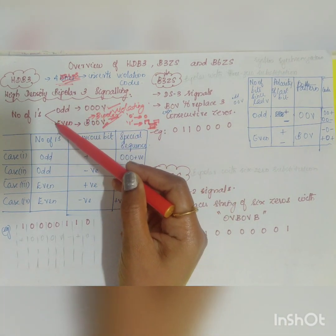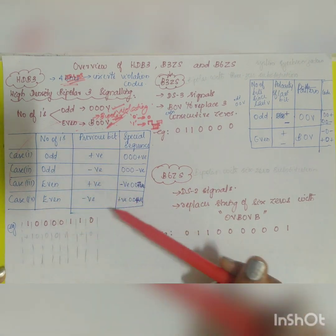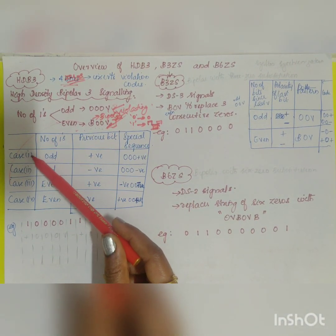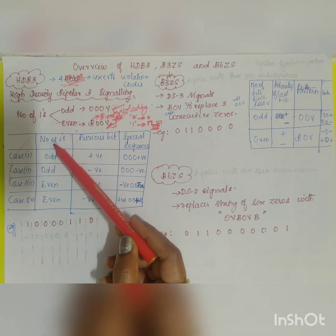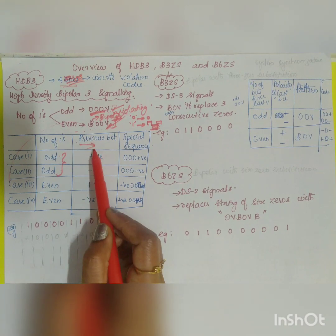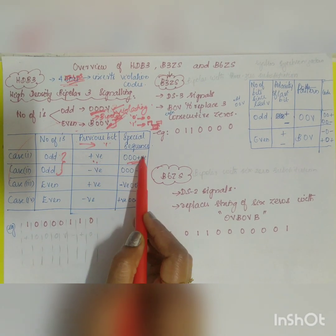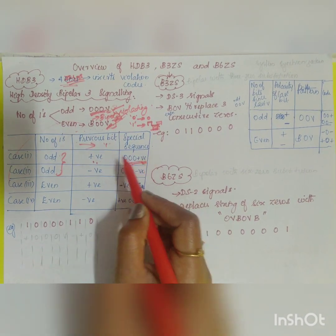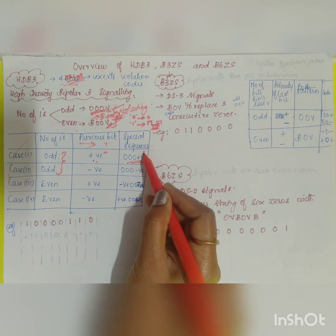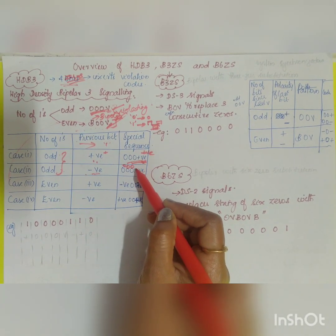The choice of code depends on one condition: if the number of ones since the last violation is odd, use 000V; if even, use B00V. For the odd case, if the previous bit was positive, the violation bit V will also be positive — violating the bipolar rule. If the previous bit was negative, V will also be negative — again violating the bipolar rule.